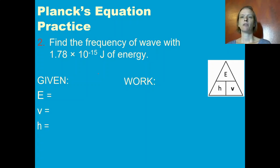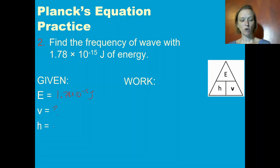Let's do another example: find the frequency of a wave with 1.78 times 10 to the negative 15 joules of energy. I know my energy — 1.78 times 10 to the negative 15 joules — and I want to know the frequency. I know Planck's constant because it's a constant: 6.6262 times 10 to the negative 34 joule seconds.